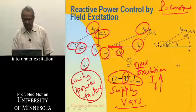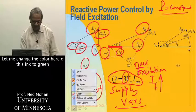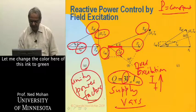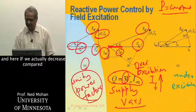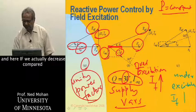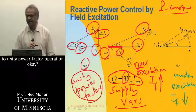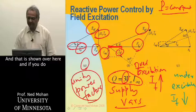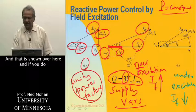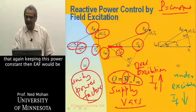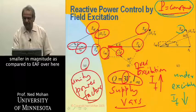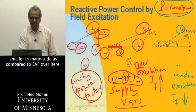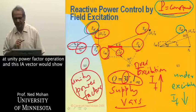In the same manner, we can go into under-excitation — shown here in green. Here IF is actually decreased compared to unity power factor operation. Keeping power constant, EAF would be smaller in magnitude compared to unity power factor operation.